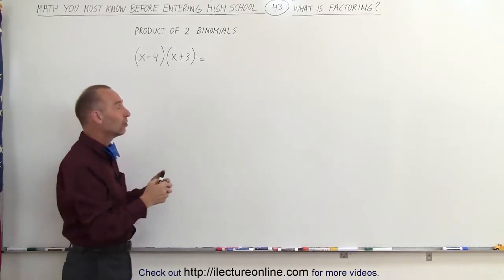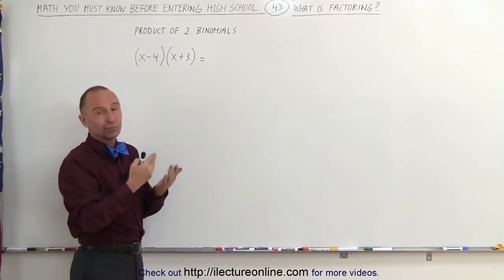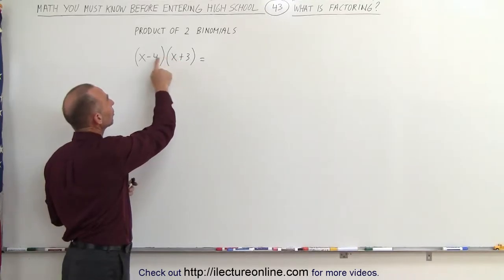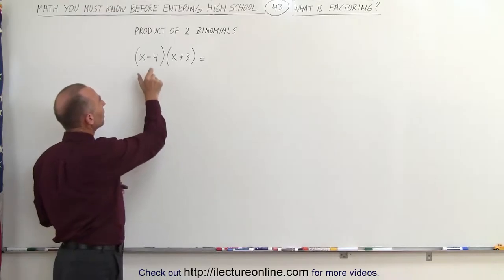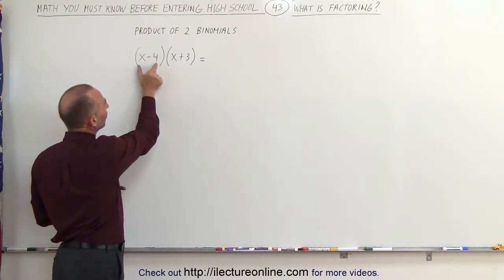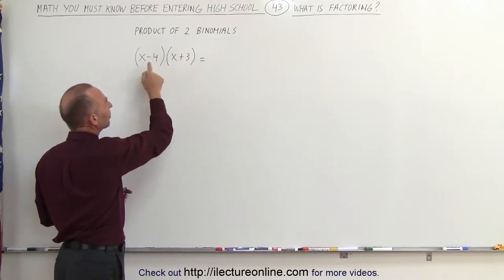A binomial is a group of terms that have both letters called variables and numbers in them. Here there's two, x minus 4, separated by either positive or negative signs, subtractions or additions. So we have x minus 4 which is called a binomial, and x plus 3 which is called a binomial, and they're multiplied together.